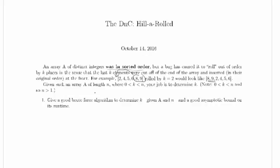Given such an array a of length n, where 0 is less than k is less than n — so the amount we're rolling by — there's at least one element being rolled, and it's not all the elements being rolled, because if everything got rolled we'd have the same array we started with, and if nothing got rolled we'd have the same array we started with. Your job is to determine k.